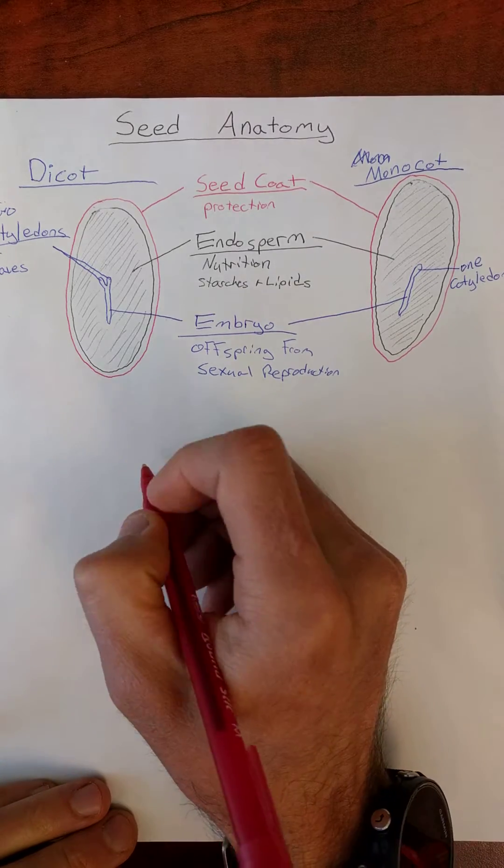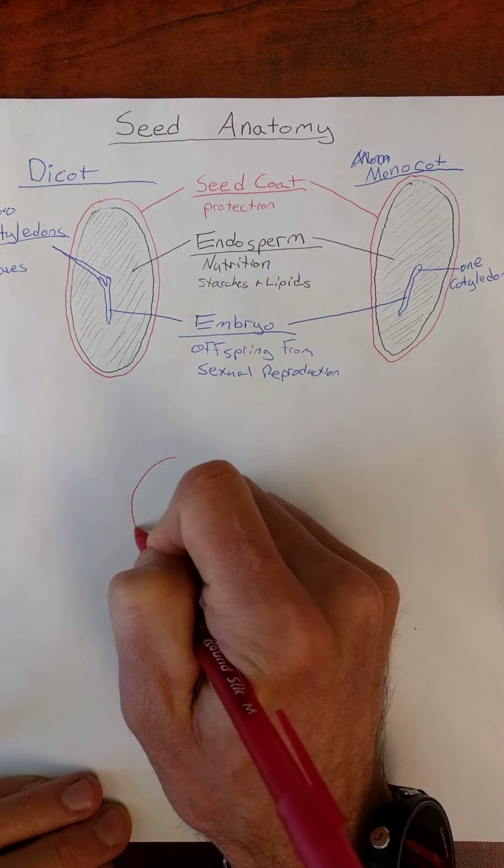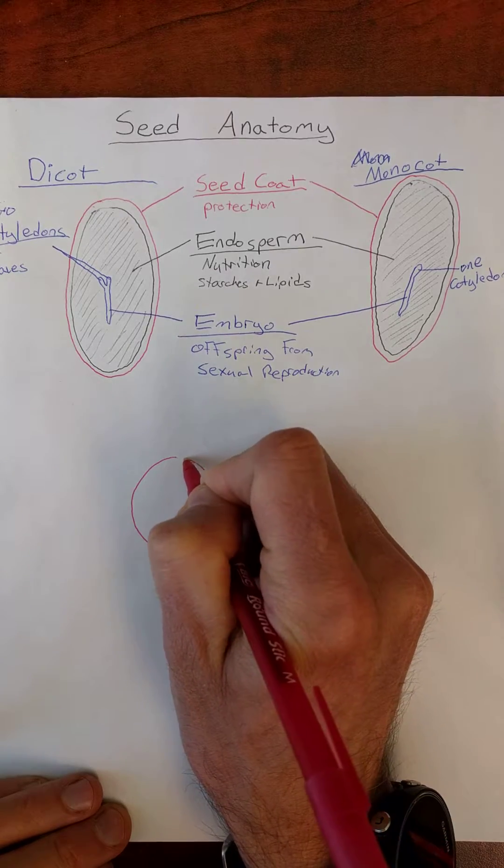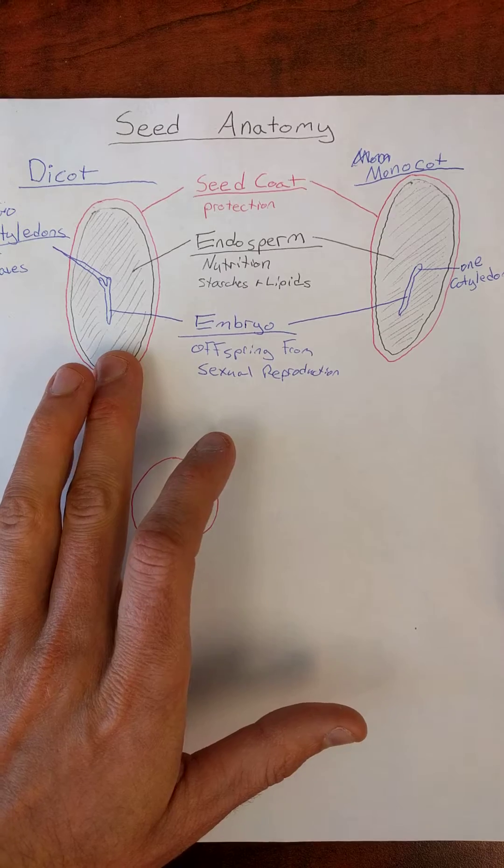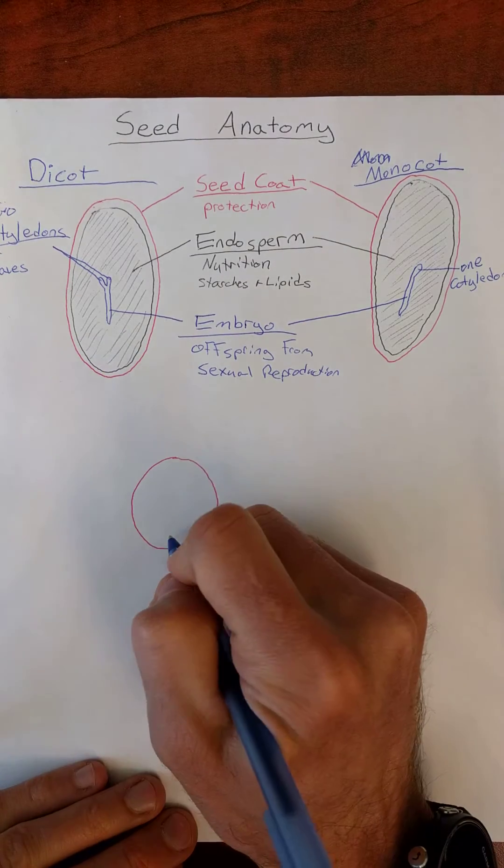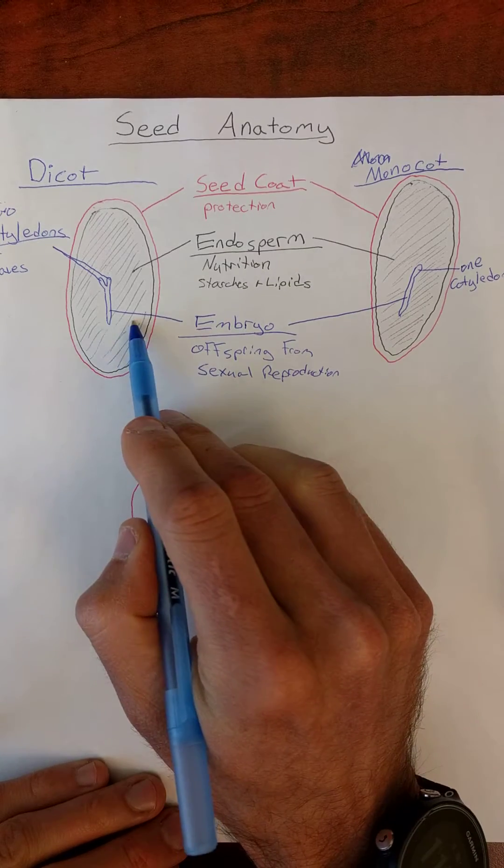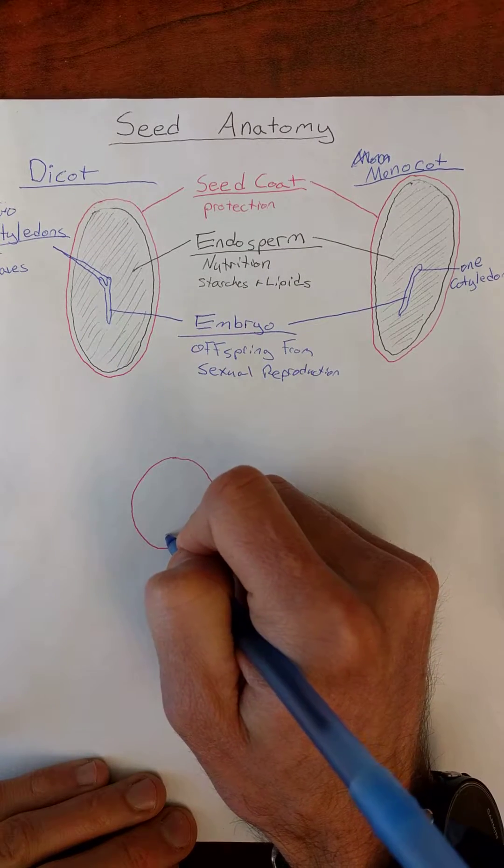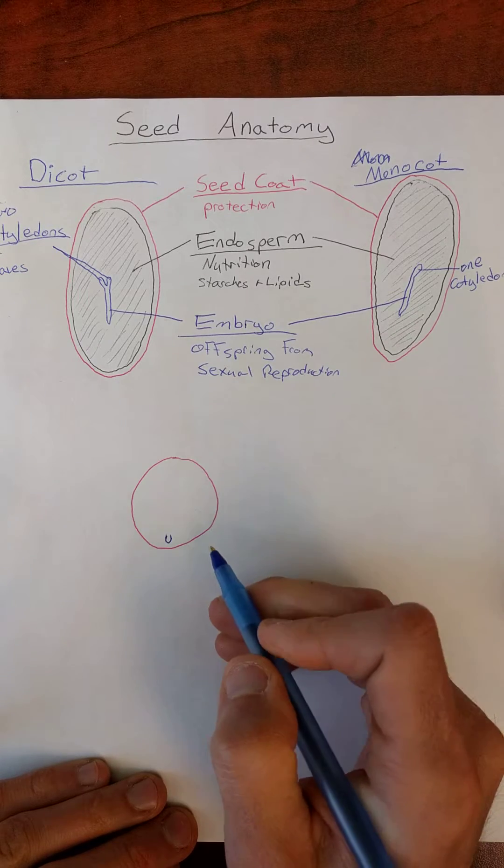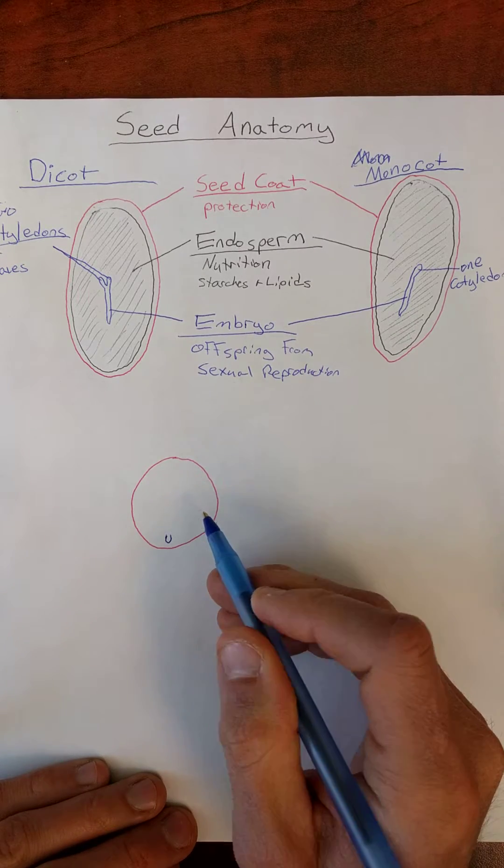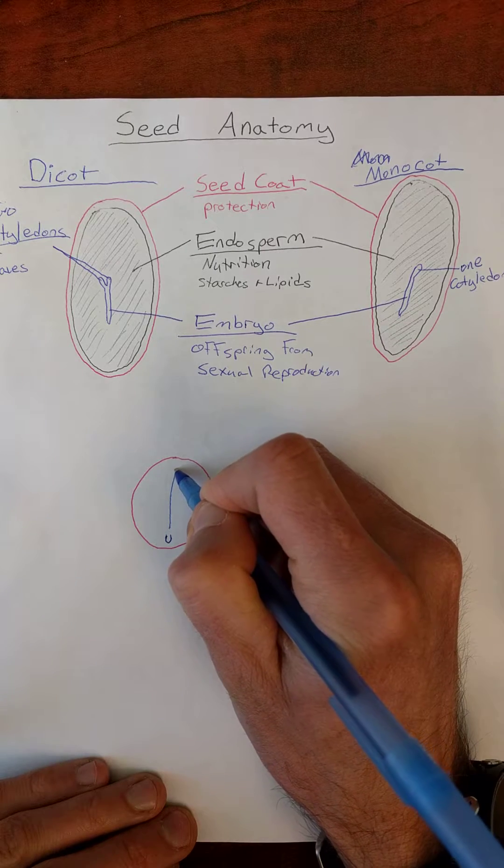Last one. I do want to draw some modifications. Often you see this in dicots that get modified. You'll still see a seed coat, but you may not actually see an endosperm. And that's because some dicots, their cotyledons, swell up and absorb the endosperm. So, you'll still often, if you pick it apart, like a peanut or a pea or other legumes, like beans, black beans.